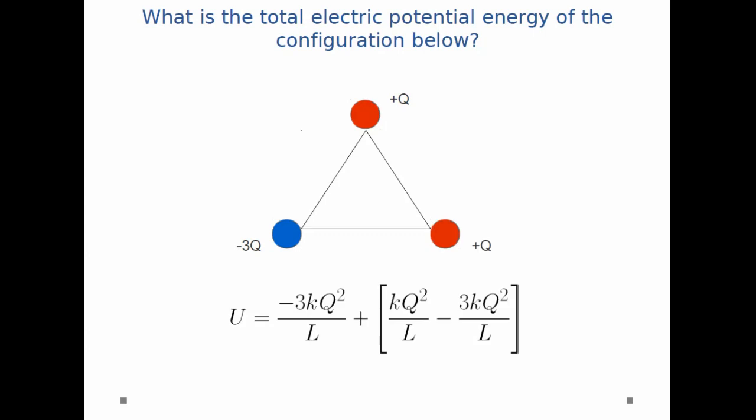And then finally, I'm going to move the third point charge onto the triangle. But the third point charge is going to interact with two point charges. So you'll notice the Q in the bottom right interacts with the Q at the top—that's the kQ squared over L. And then the Q in the bottom right interacts with the minus 3Q on the bottom left—that's the minus 3kQ squared over L.